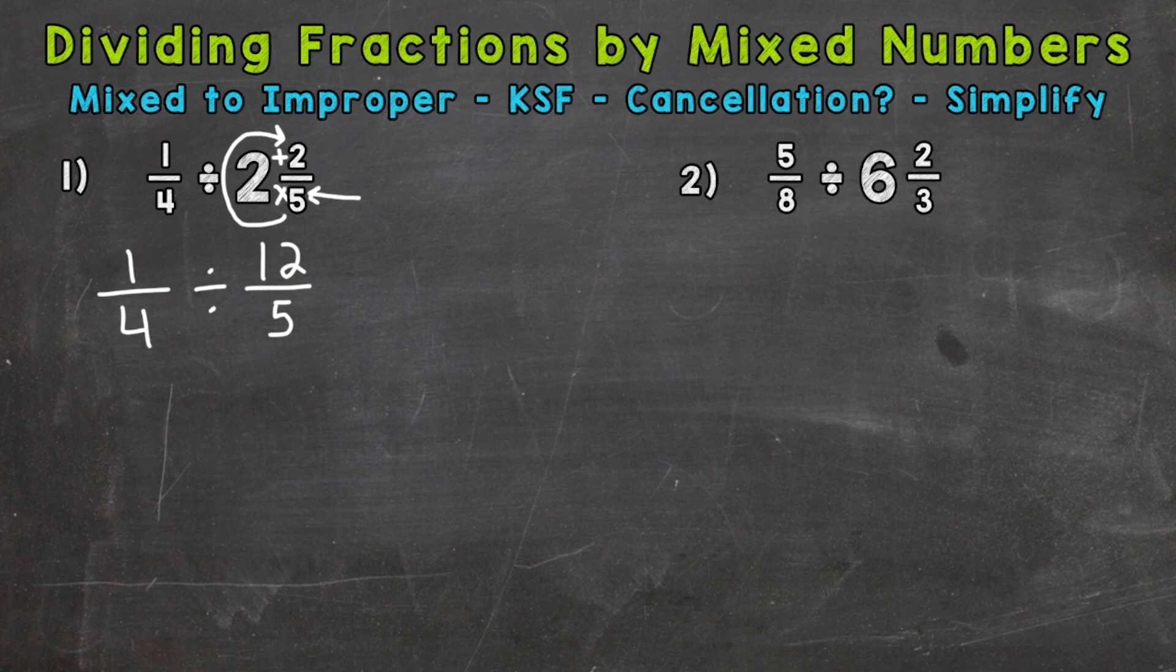The next step is keep, switch, flip. KSF. Those are the steps of dividing fractions. We always keep our first fraction. Switch the division sign to multiplication. And since we switched to the opposite of division, multiplication, we need to flip our second fraction. So flip, meaning the five is going to be the numerator now, and the twelve is going to be the denominator.